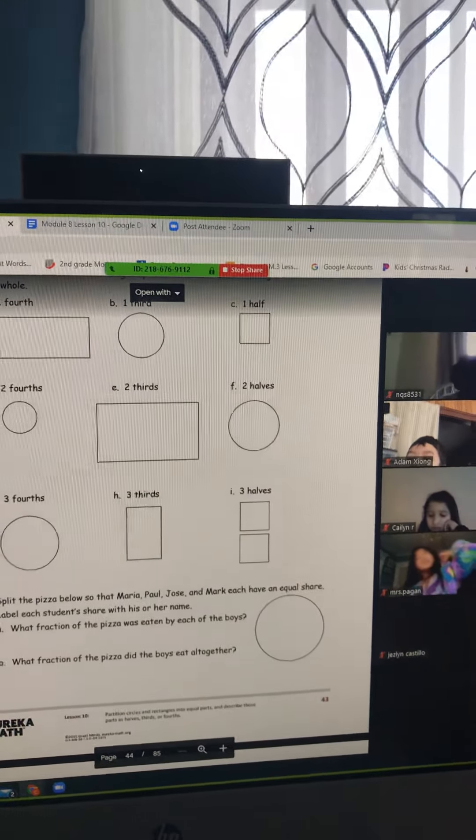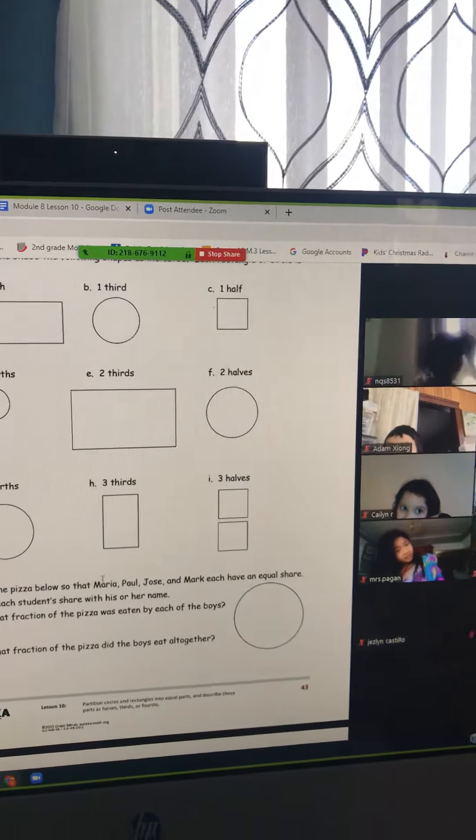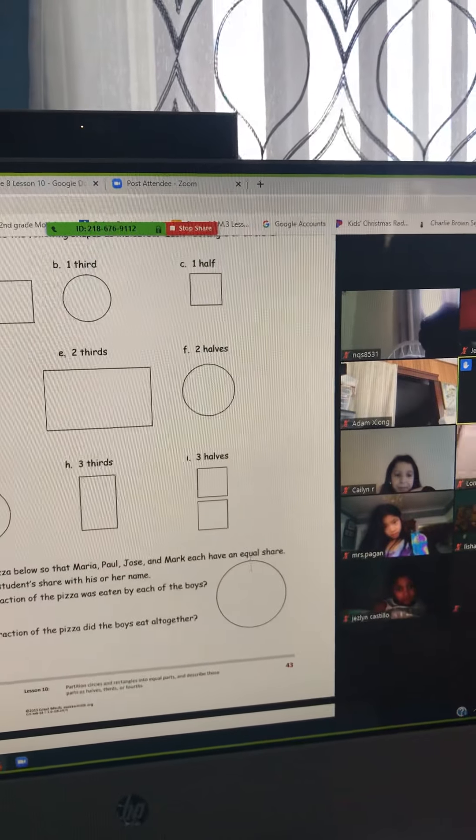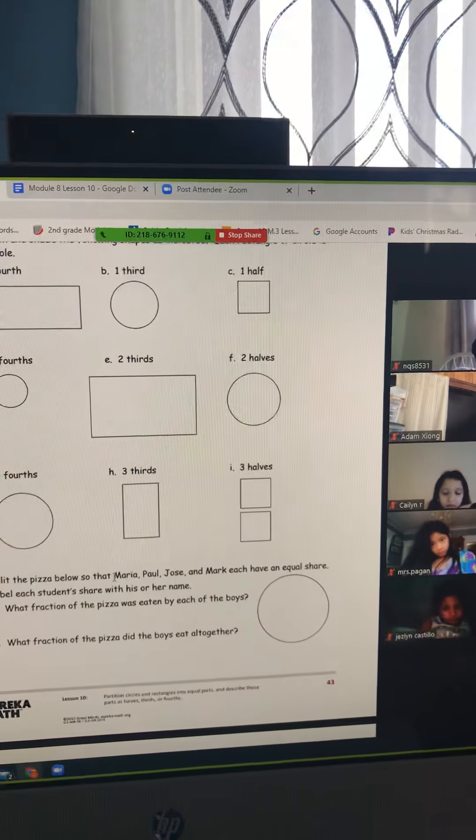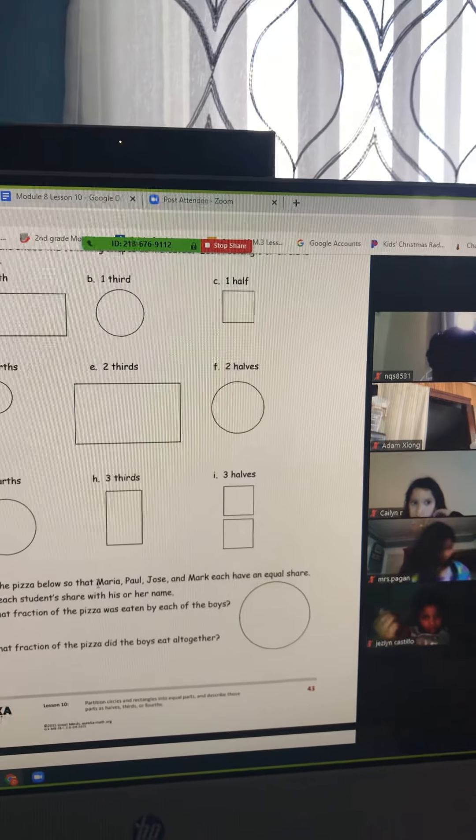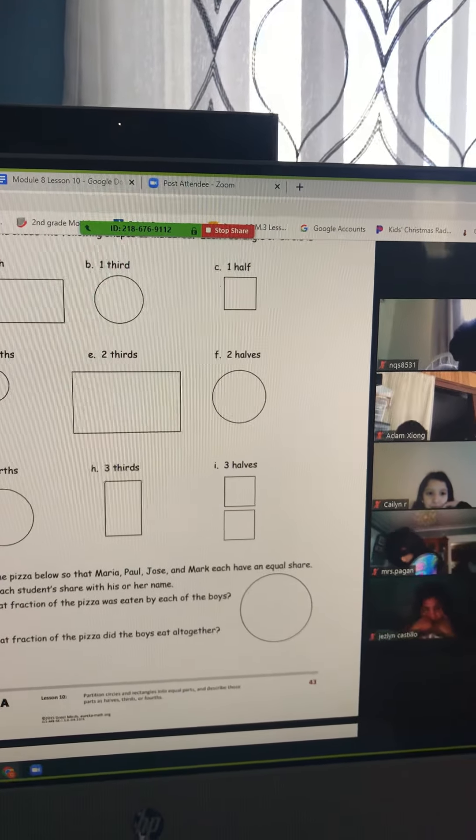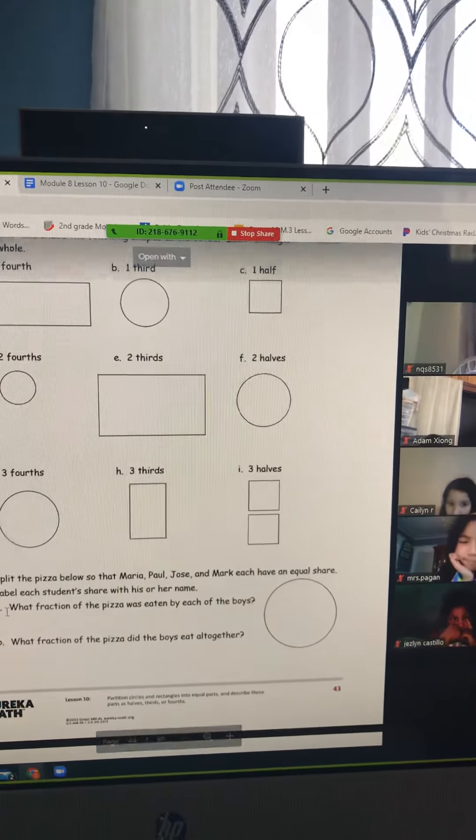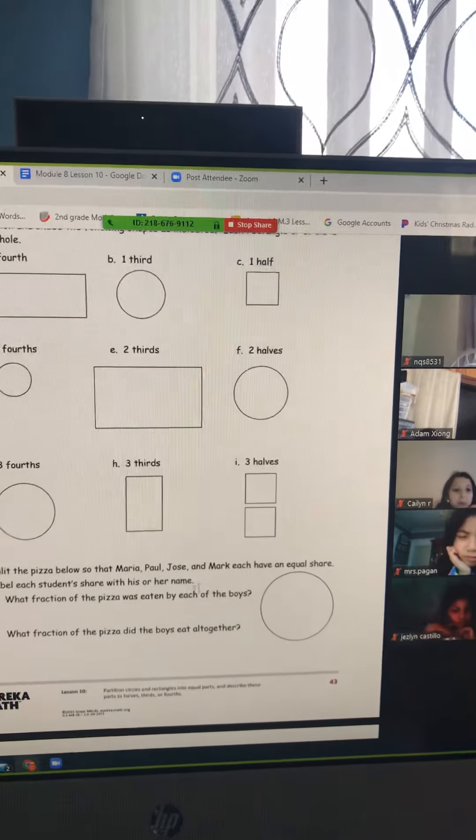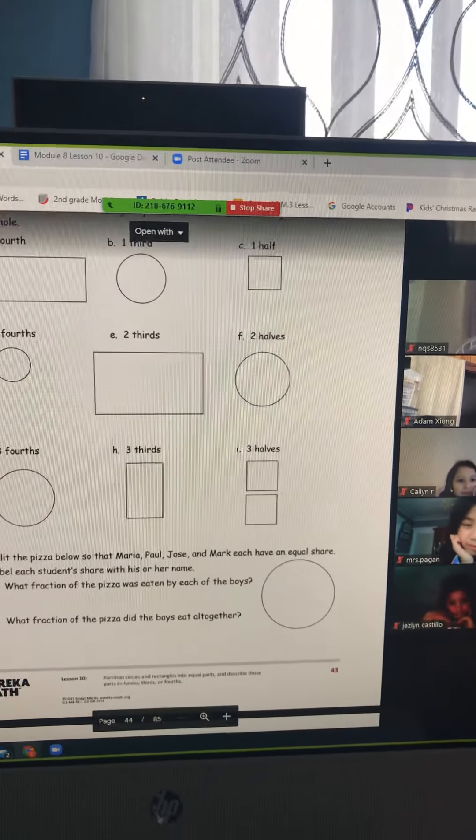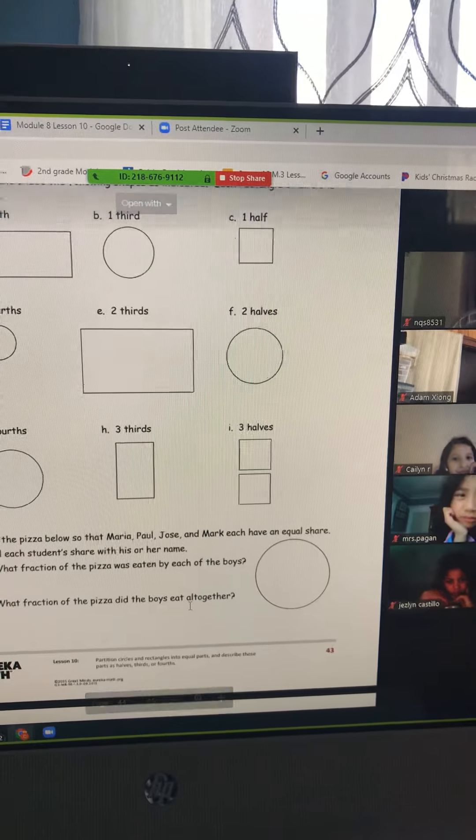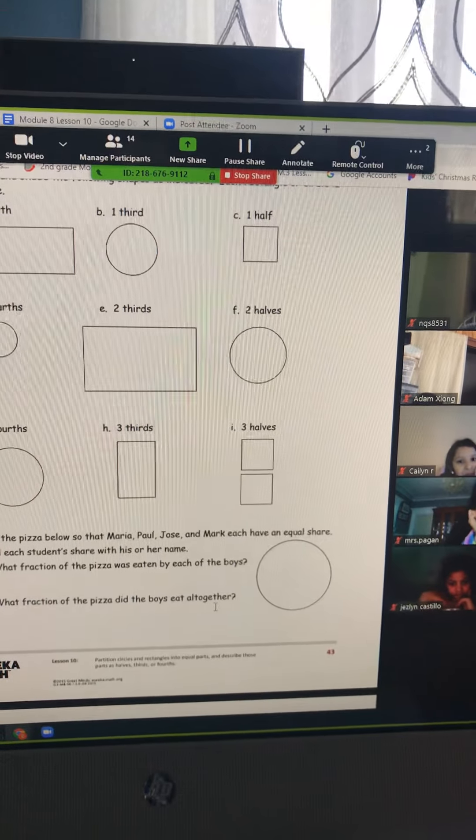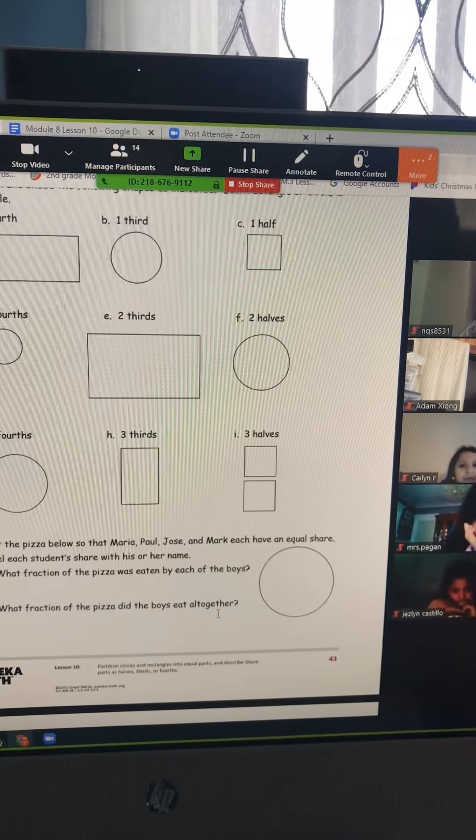Question five. Split the pizza below so that Maria, Paul, Jose, and Mark each have equal shares. Think of how many people that is. Label each student's share of the pizza with their name. What fraction of the pizza was eaten by the boys? And what fraction of the pizza did the boys eat all together?